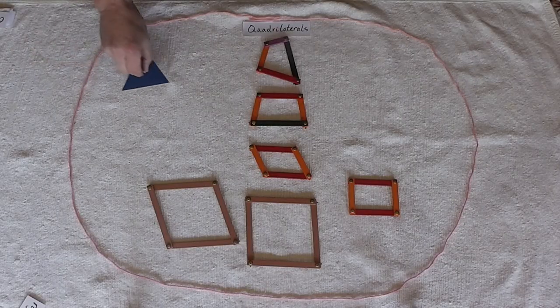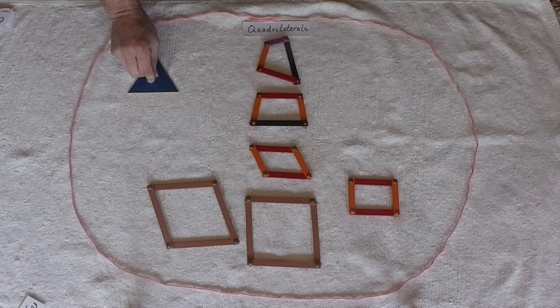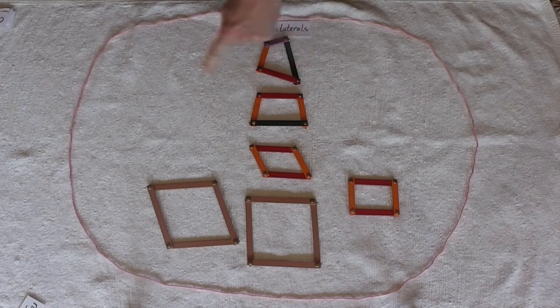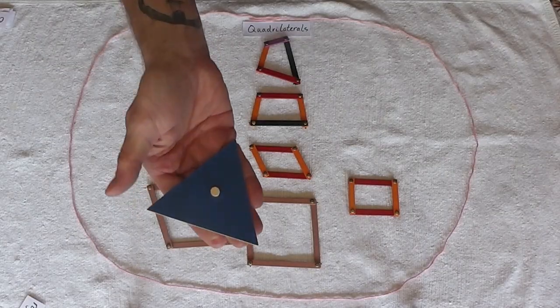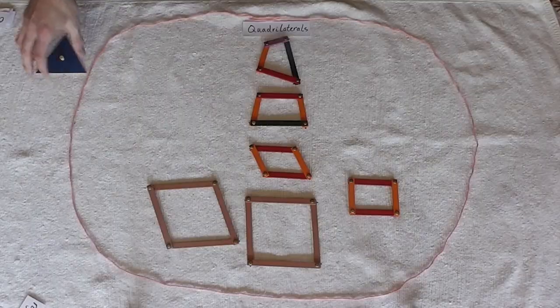If I placed a triangle, it should not go inside of the circle. Why? Because it doesn't have four sides. A triangle has three sides. So I would put the triangle outside of the circle.